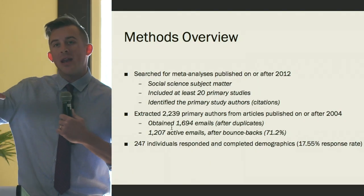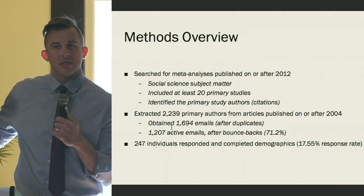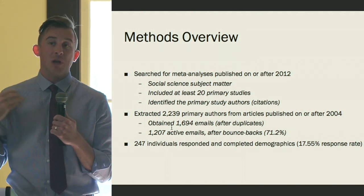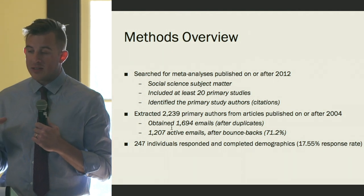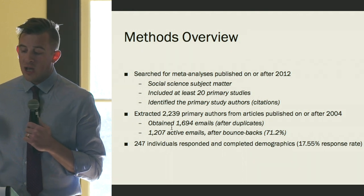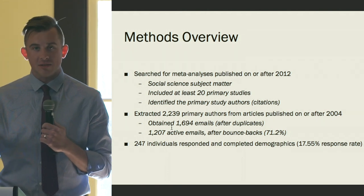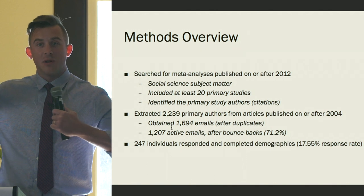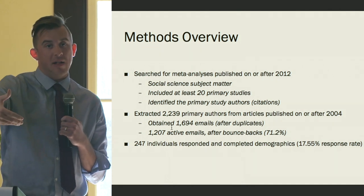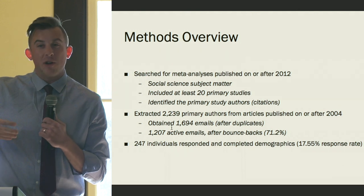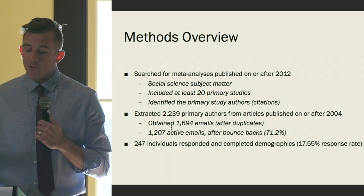For study two, we searched for meta-analyses published in 2012 or beyond. From those, we collected citations within each meta-analysis to get a list of primary study authors who had recently conducted impact evaluations. We extracted 2,200 primary authors from those articles, then obtained 1,600 emails. After removing duplicates and inactive emails, we had about 1,200 active emails as our sampling frame. Of those 1,200, 247 individuals responded.